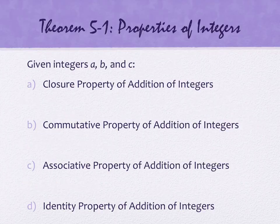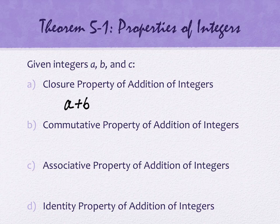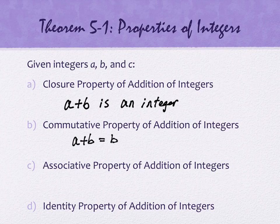Let's look at the properties of integers. This is going to look and feel just like your properties of whole numbers. The closure property says: if A and B are integers, then A plus B is an integer. In other words, I can't add integers together and get a fraction, a square root, or anything except another integer. That's closure — add two integers, you get an integer.